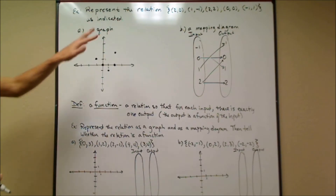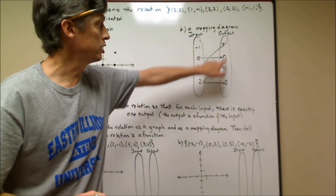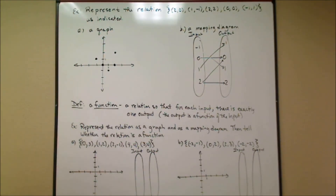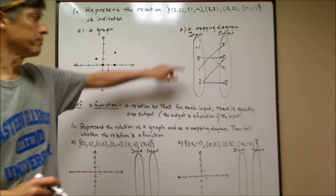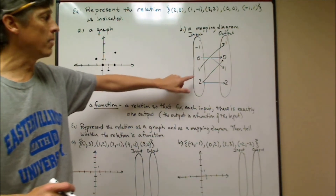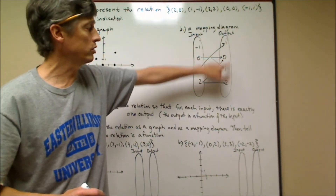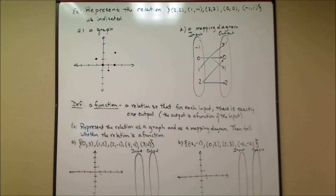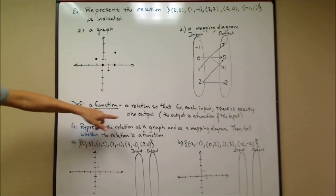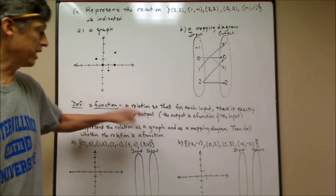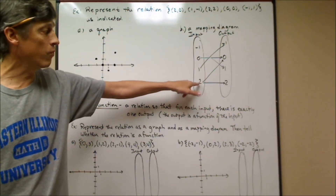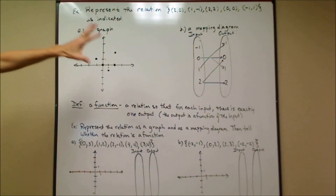Now notice that in this relation, one of the inputs — the value 2 — corresponds to two different outputs: 0 and 2. That's a problem. I'm not worried about two different inputs mapping to the same output, but I am concerned when one x-coordinate corresponds to two different y-coordinates. That brings in the idea of a function. A function is a relation where for each input there is exactly one output. So this example would not be a function — it's still a relation, but not a function.